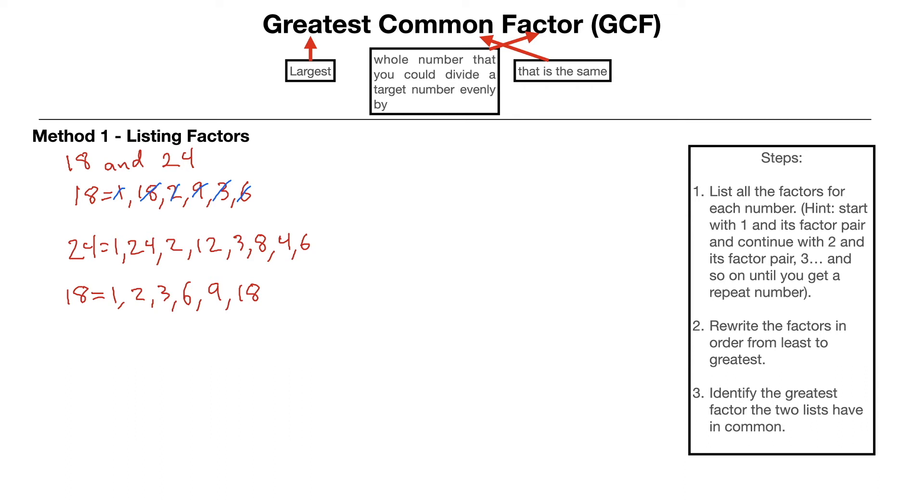Then I'm going to do the same thing for the number 24. So we've got 1, 2, 3, and 4. So I've got 1, 2, 3, and 4 are done. And then we've got 6, 12, 24. And those are all of our factors.